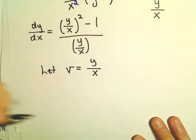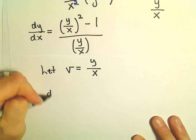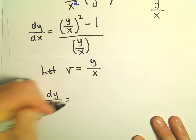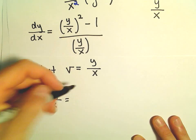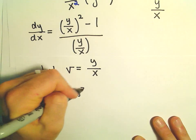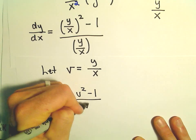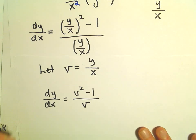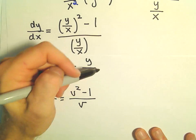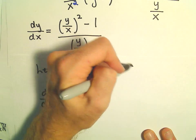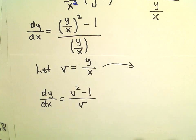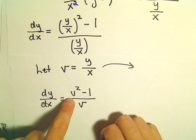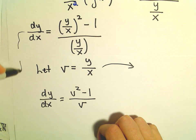If we do that substitution, dy over dx becomes v squared minus 1 over v. Now, I've just taken the original differential equation and done a substitution — that's all.